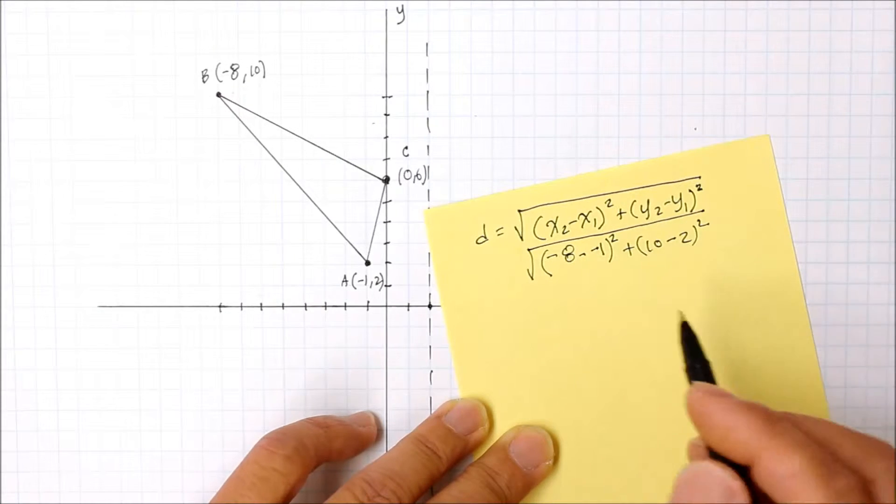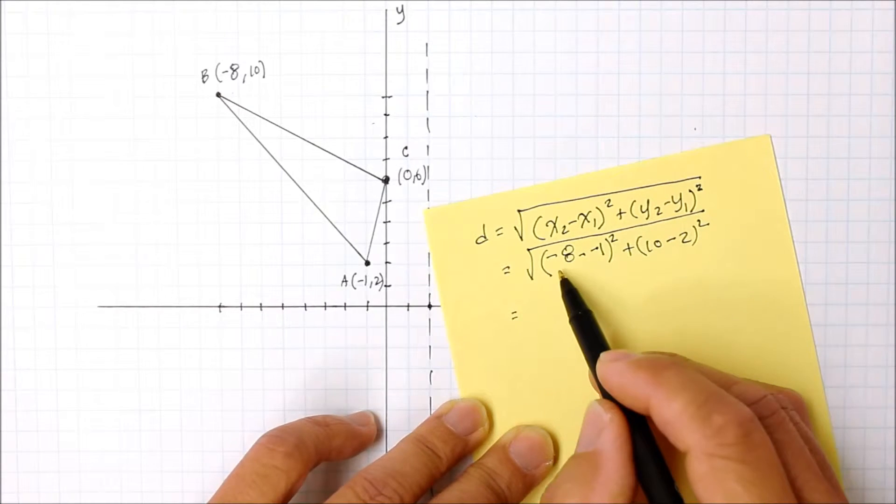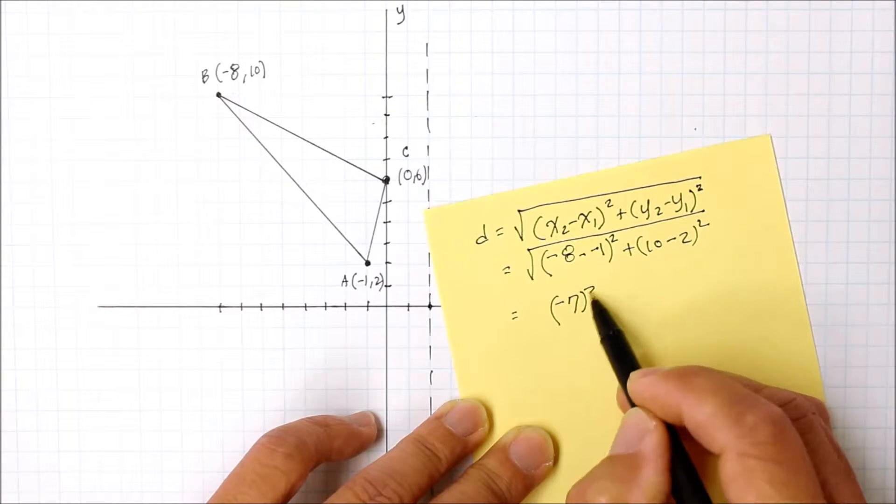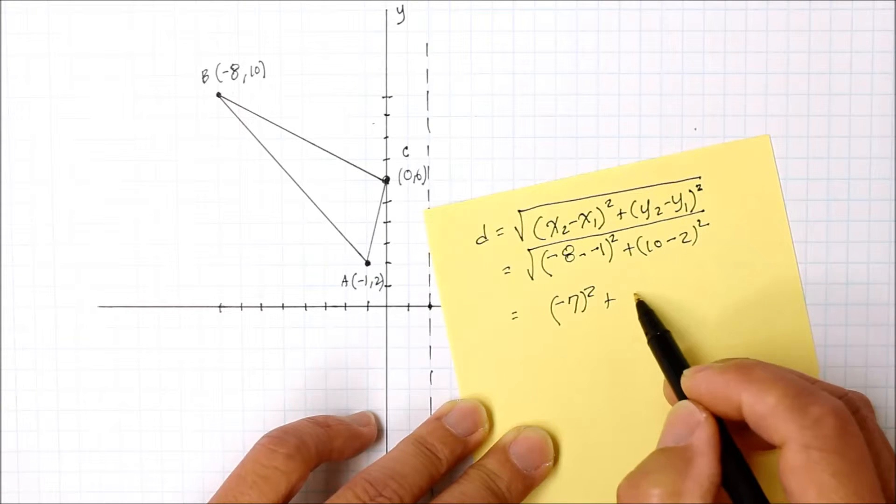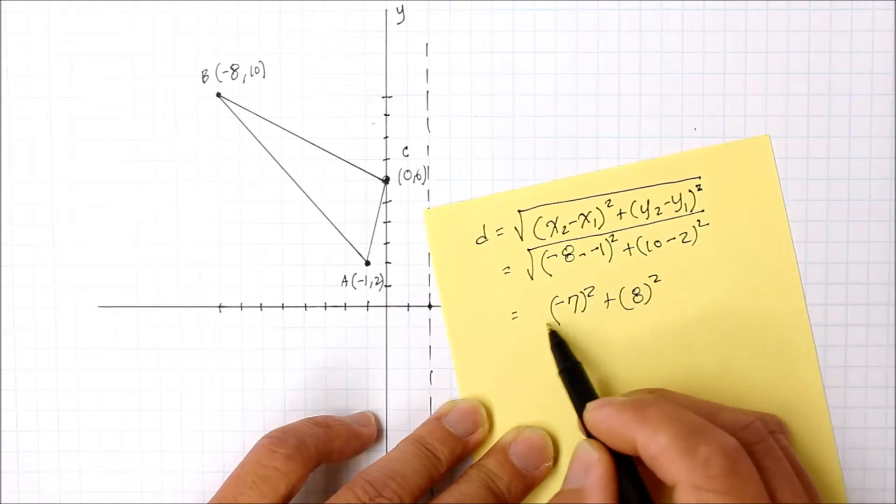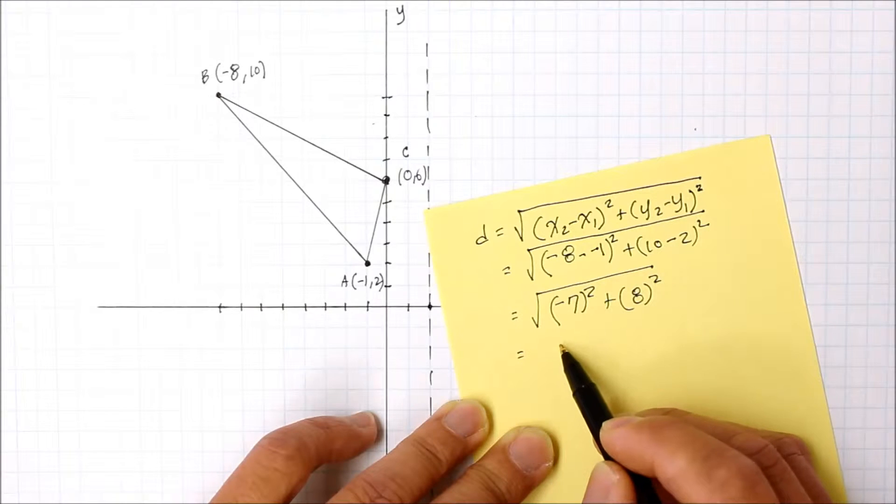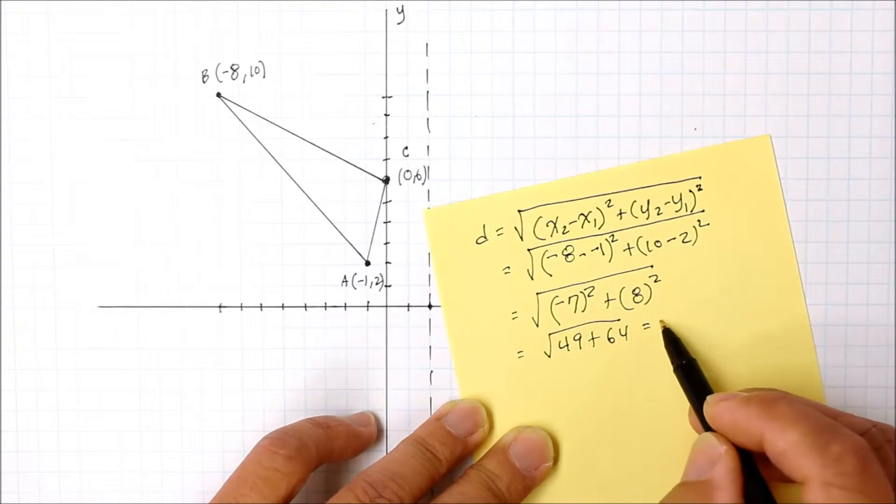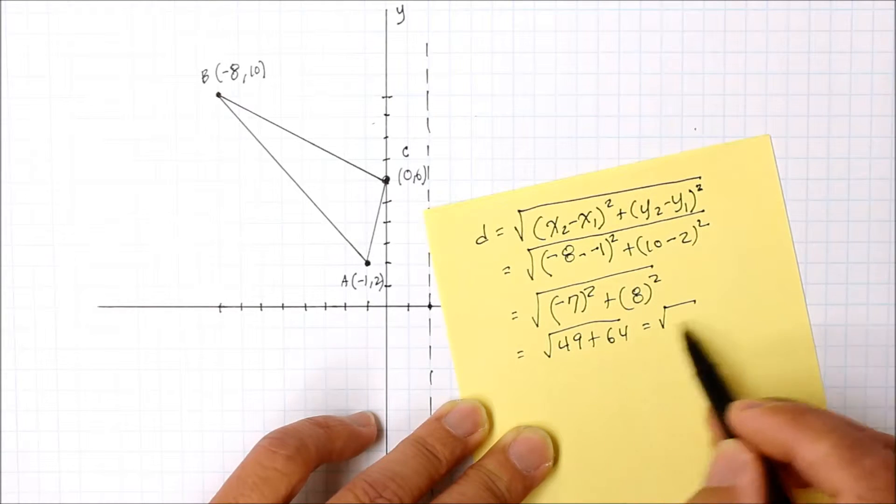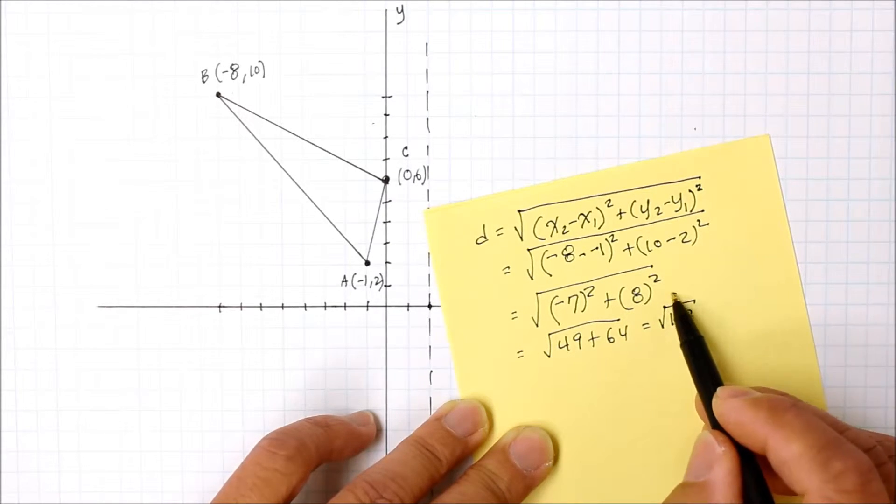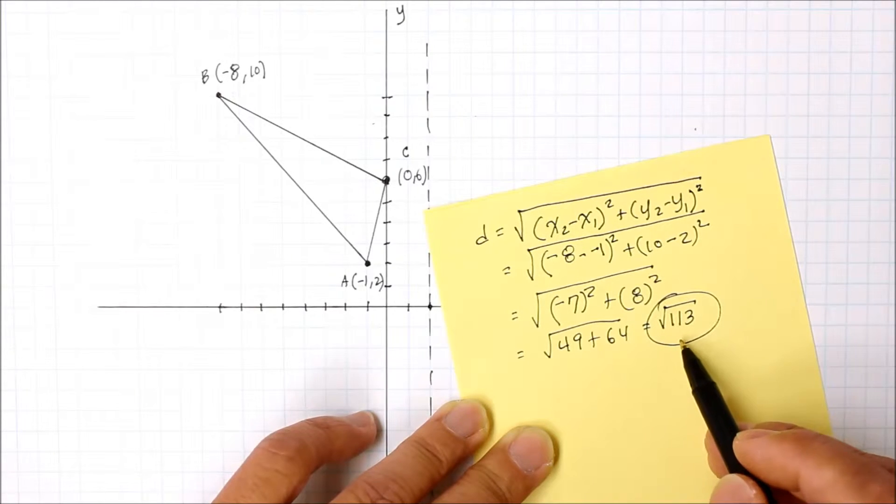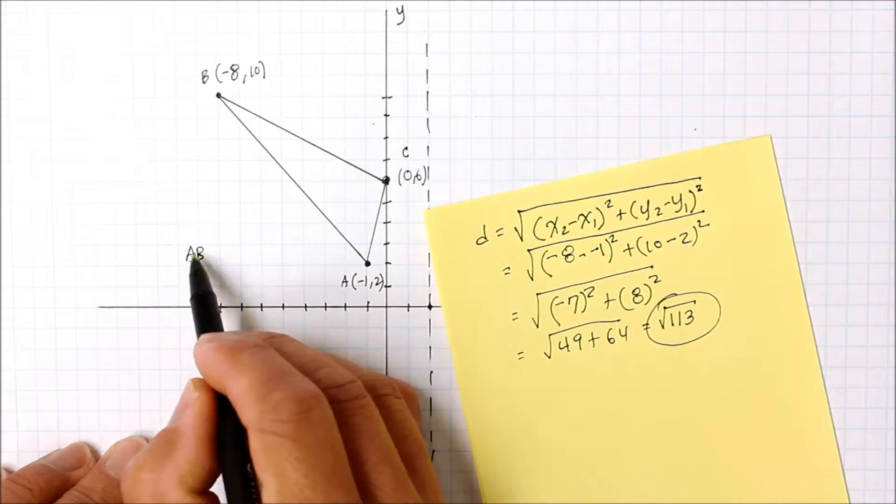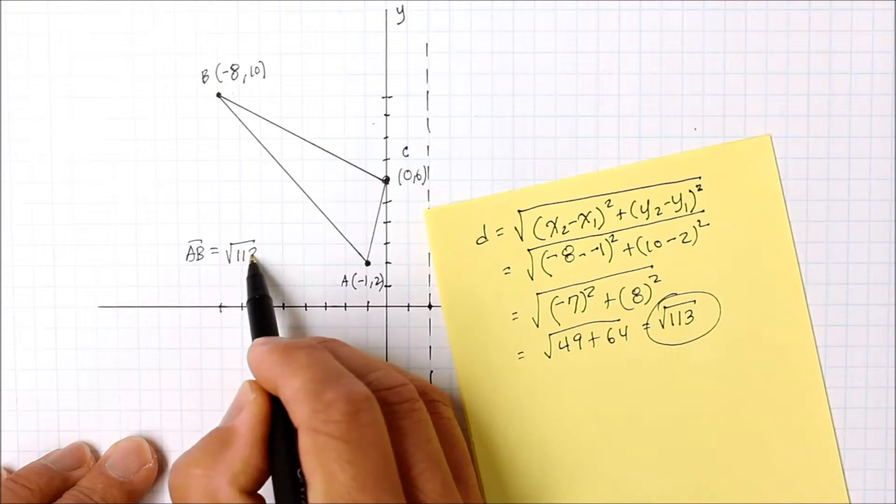Whatever that's going to be, we're going to square root that as well. Negative 8 plus 1 is negative 7, and 10 minus 2 is 8, squared. Showing it step by step, that becomes 49 plus 64. Thus, that becomes square root of 113. Since 113 is a prime number, we'll leave our answer as a radical. The distance between A and B is square root of 113.